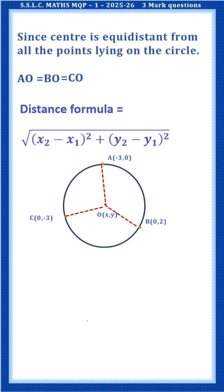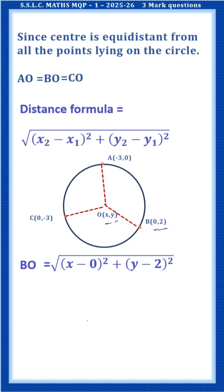Now let us calculate BO. Here x1 is x, x2 is 0, y1 is y, y2 is 2. Substituting and expanding using the (A-B)² formula: BO = √(x² + y² - 4y + 4).